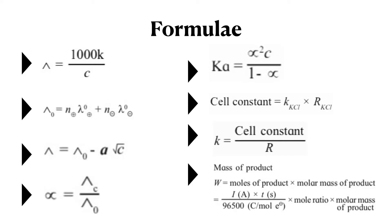Cell constant is equal to conductivity of KCl solution multiplied by resistance of KCl solution. Next, kappa is equal to cell constant upon R, where kappa is the conductivity of any solution, equal to cell constant divided by resistance of the solution.